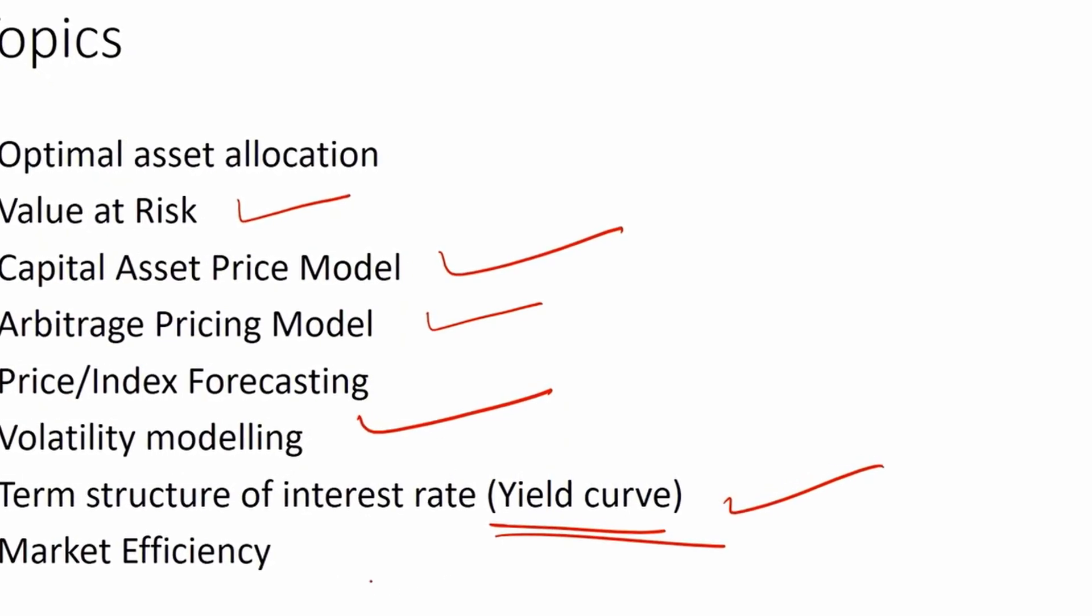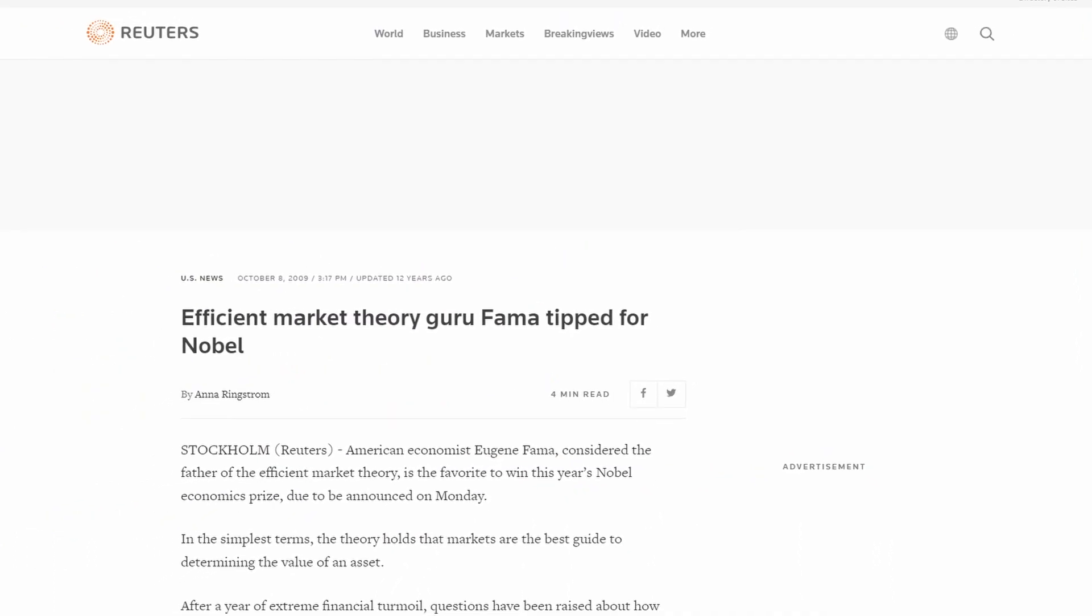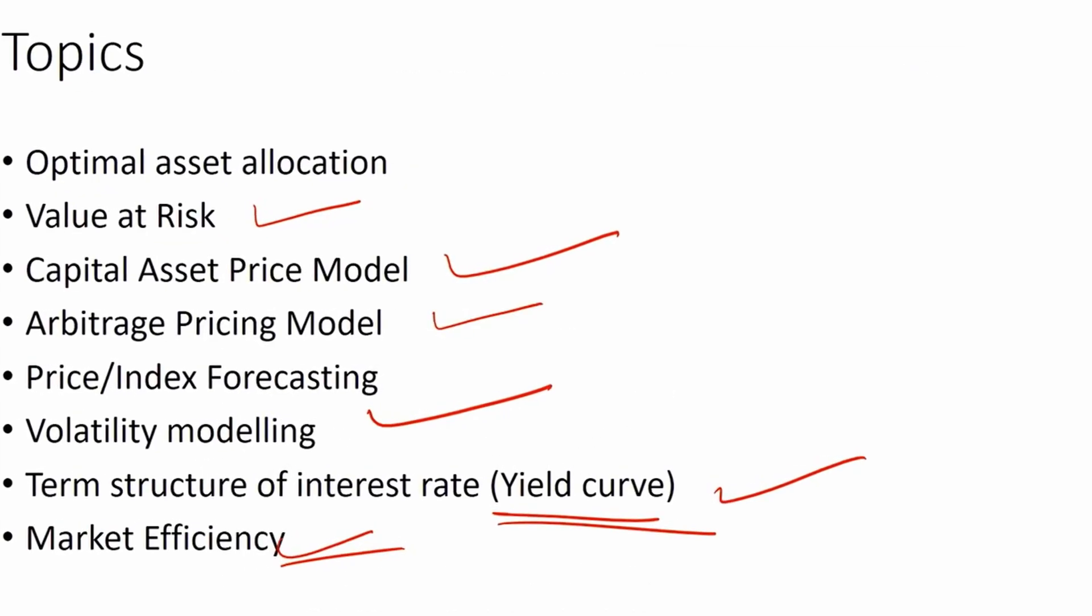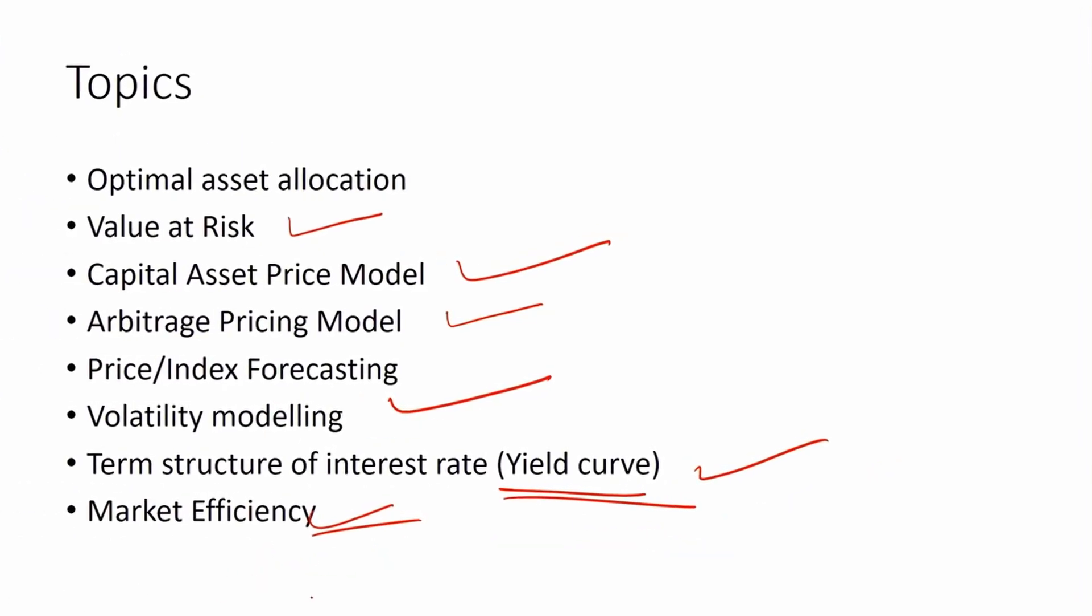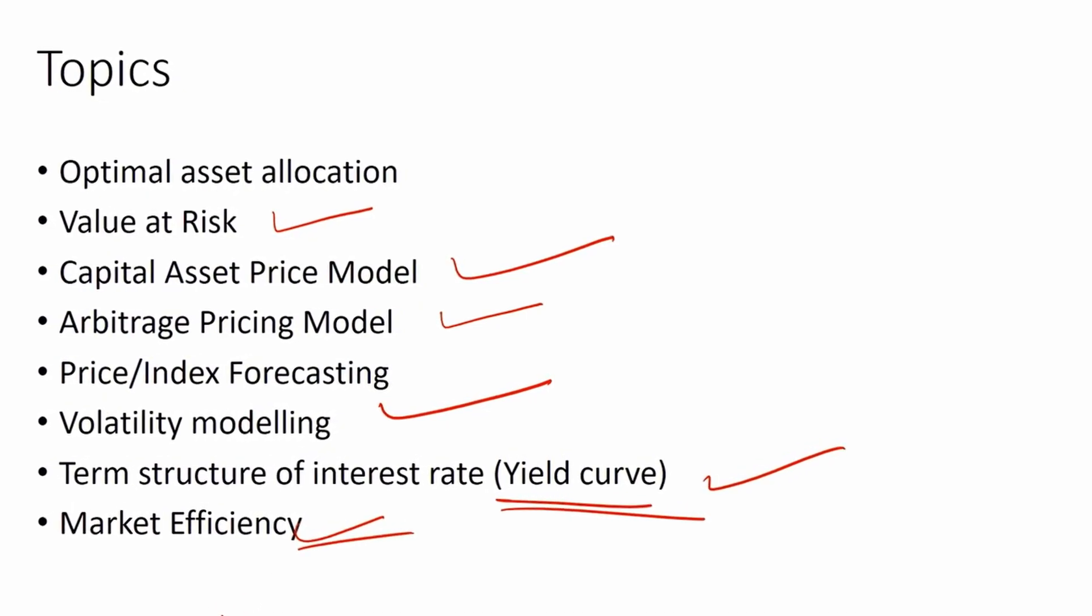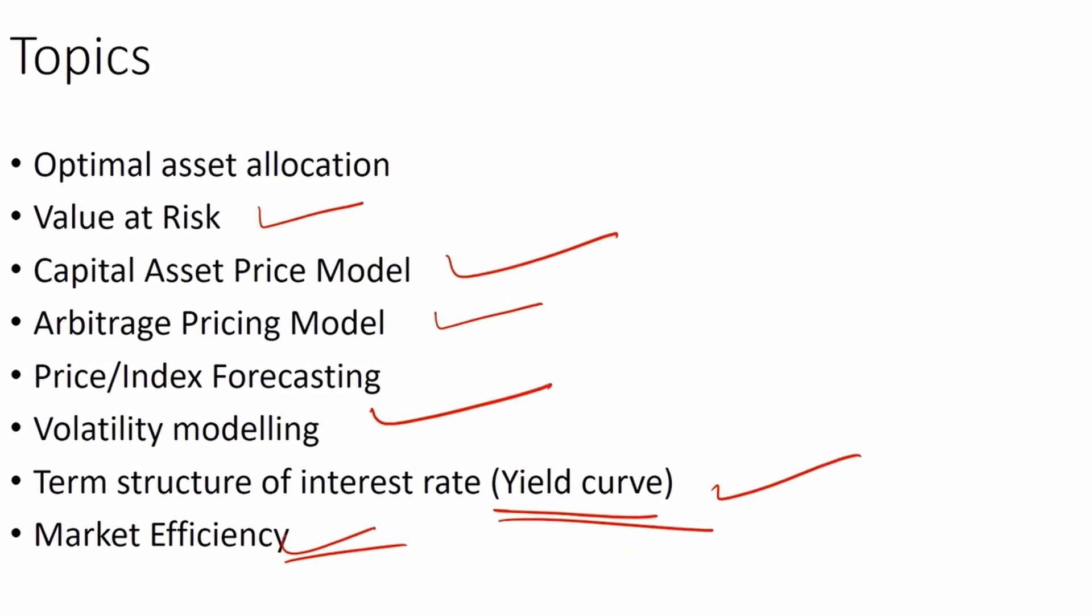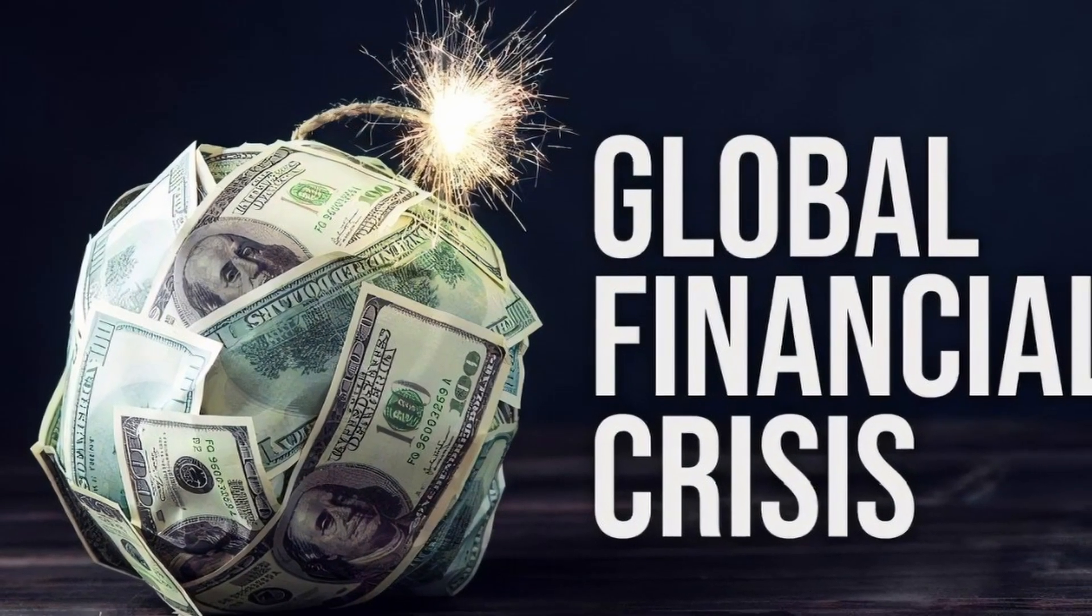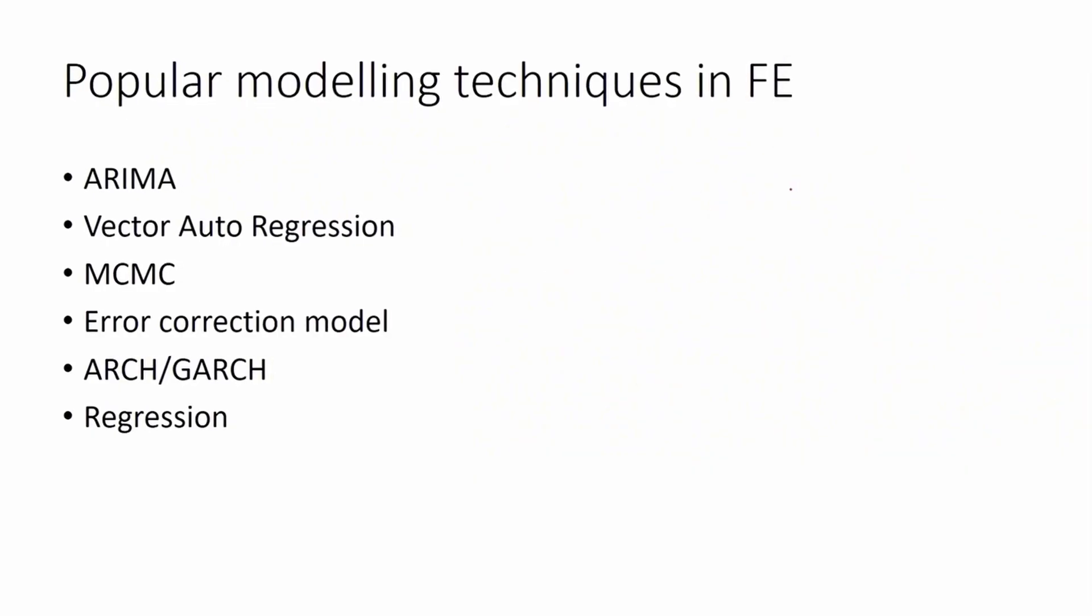Yield curve analysis is where you see the future interest rate and market efficiency. You might have heard about efficient market hypothesis. Researchers do lots of analysis on understanding both efficiency and deficiency in the market. Financial econometrics is also used there, and apart from that, many other topics like anomaly detection in price data or market data, or analysis on economic downturns or forecasting the possibility of economic downturns.